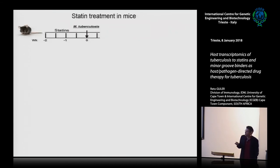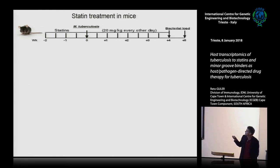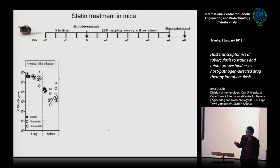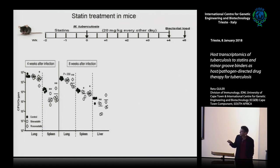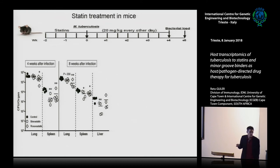We then started statin treatment in mice: mice were treated with statins every second day, given MTB, and at four and eight weeks post-infection we measured bacterial growth directly in the lungs and in the spleen as a measure of dissemination. With rosuvastatin, we observed reduced bacterial growth, and importantly, dissemination to the spleen was reduced compared to controls. The same trend was seen at eight weeks — particularly rosuvastatin in the lungs, and both types of statins prevented dissemination to the spleen.